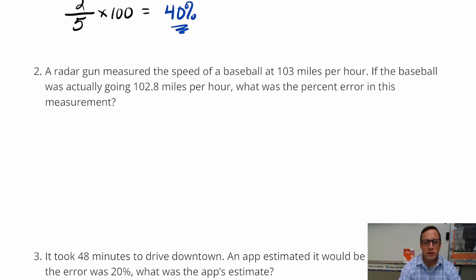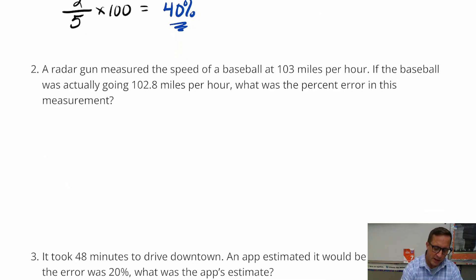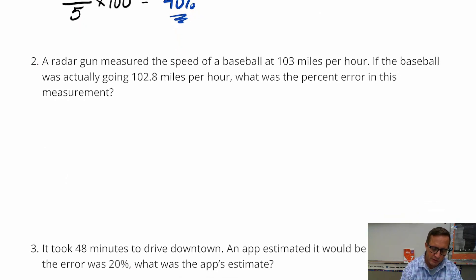Number two, a radar gun measured the speed of a baseball at 103 miles per hour. If the baseball was actually going 102.8 miles per hour, what was the percent error? So that's probably not that big, but for this one they're off by two tenths. And here's that word again, actually going 102.8. So you're going to do 0.2 over 102.8, multiply that by a hundred.